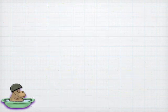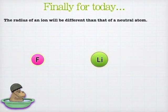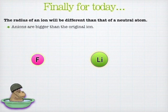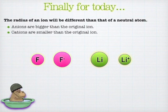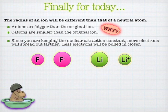The last thing to talk about for radius is what happens with ions. There's definitely a lot more detail you can go into for this, but the radius of an ion will be different than that of a neutral atom. Anions tend to be bigger than the original, and cations tend to be smaller. For anions, you're going to have less of a nuclear pull on each electron, and so the electrons will fade out a little bit more. Plus, since you do have another electron, there is a slight increase in electron-electron repulsion, and that'll push the electrons away from each other a little bit too.